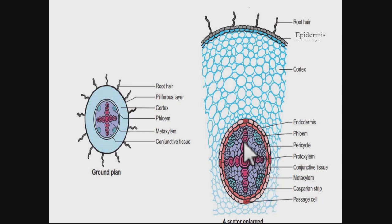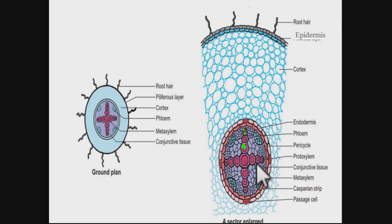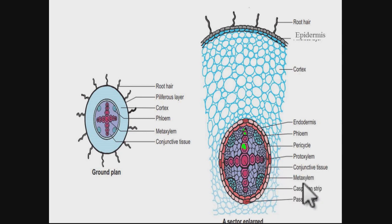Remember that meta xylem, which is the larger xylem, faces towards the center, and proto xylem faces towards the outer side — this is called exarch condition. The phloem tissue and xylem are side by side on alternating radii, separated by conjunctive tissue. We have already discussed Casparian strips and passage cells in the endodermis.